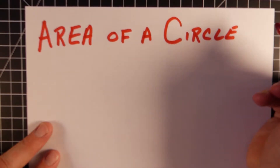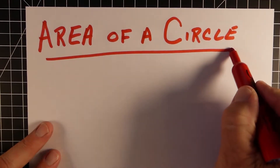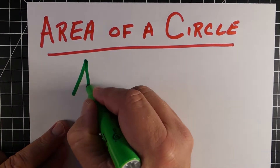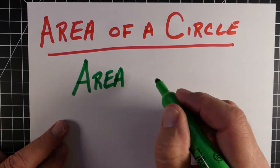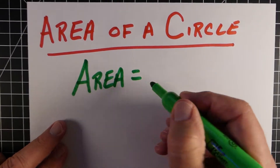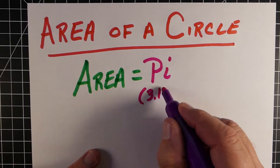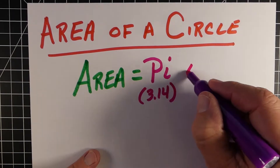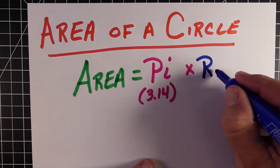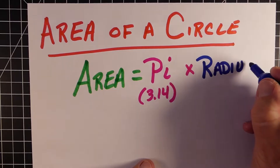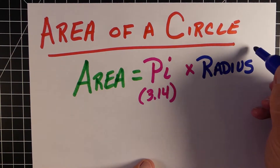The other formula we need to review is the area of a circle. To find the area of a circle, we again take pi — and once again, that's 3.14 — and we multiply that times the radius squared. So the formula is pi times radius squared.